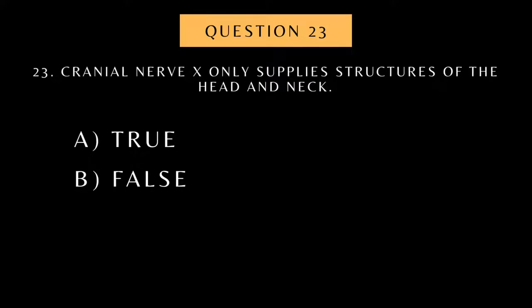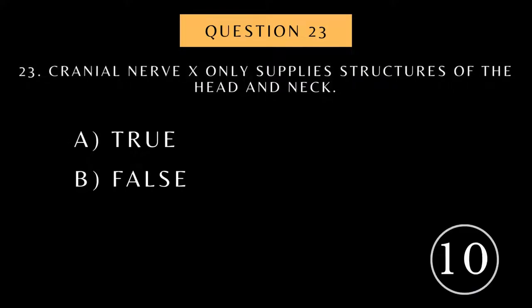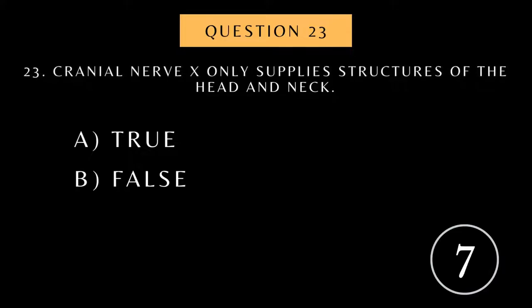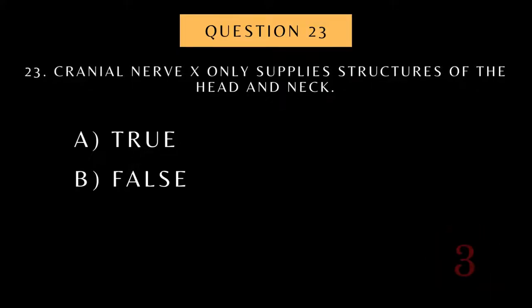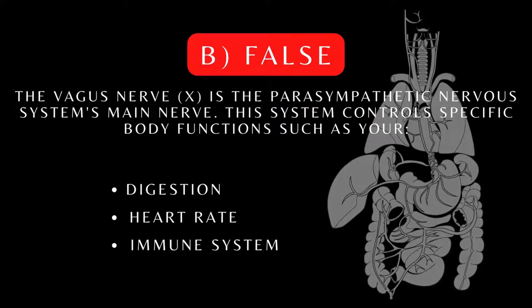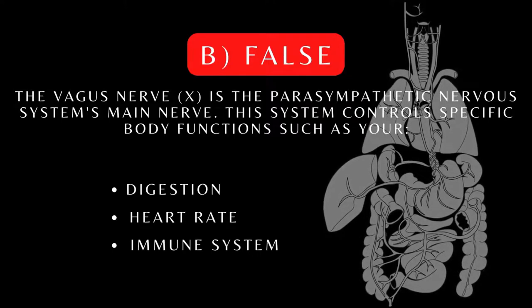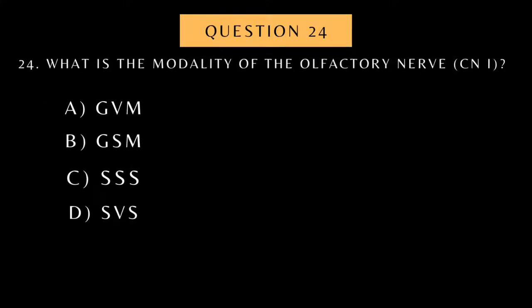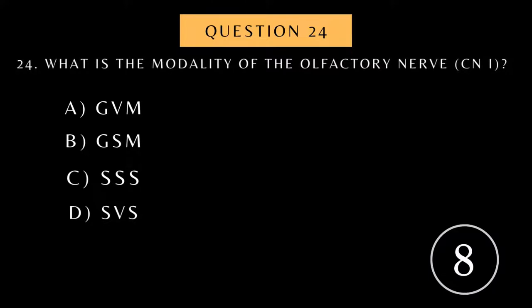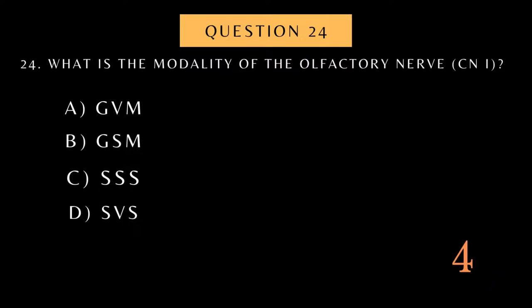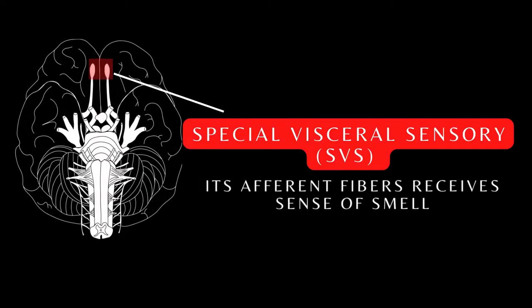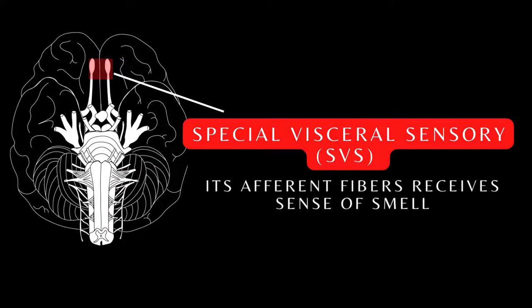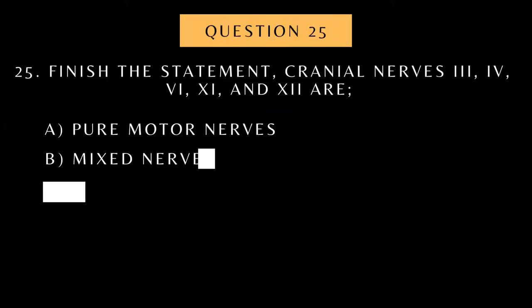Cranial nerve 10 only supplies structures of the head and neck. What is the modality of the olfactory nerve? Cranial nerve 3...